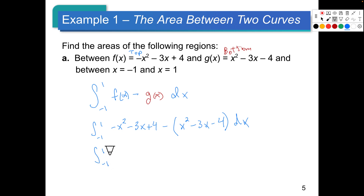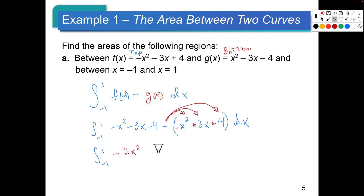I'm going to distribute that negative: this becomes negative x squared, this becomes positive 3x, this becomes positive 4. So when we combine like terms, we get negative 2x squared. Negative 3x and positive 3x — those cancel out. And then positive 4 and positive 4 is plus 8. So that's the new step today. Figure out which one's on top, subtract the bottom from the top, combine like terms. Now let's integrate.